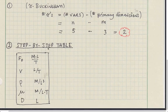Next, build the step-by-step table. List the variables in the problem and then list their primary dimensions. The primary dimensions of the drag force are mass times length over time squared. The primary dimensions of velocity are length over time, etc.